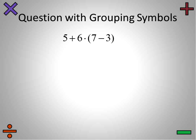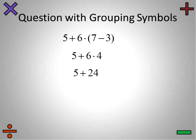Here's a question with grouping symbols. When dealing with grouping symbols or parentheses, they get done first — whatever is inside gets done first. If there are multiple operations inside, you do them according to order of operations: multiplication and division first, then addition and subtraction. In this case, we have one operation inside: 7 minus 3 is 4. I'll get rid of the parentheses now. We have addition and multiplication left — multiplication gets done first. Then 24 plus 5 gives us 29 as our final answer.